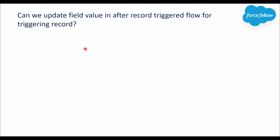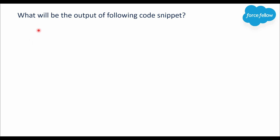Next question: can we update a field value in an after record-triggered flow for the triggering record? For example, if we have an after flow on the Contact object and we try to update fields on the current triggering record — not a related record. In an after trigger, you cannot update field values for the triggering record. However, in an after flow you can update field values on the triggering record, but this is not a good practice because it may cause recursion.